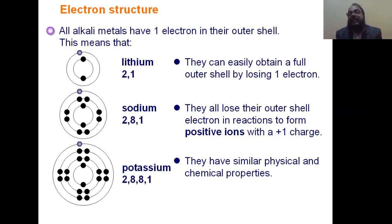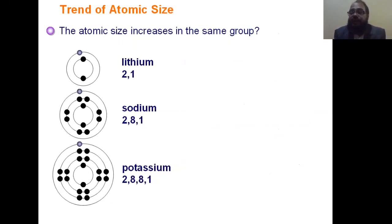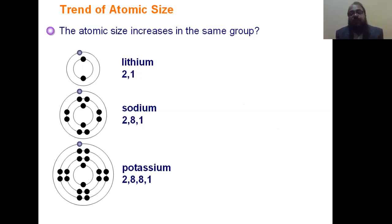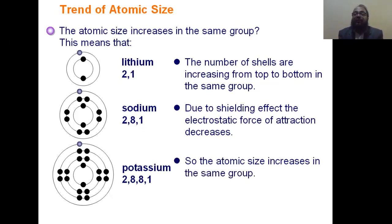A trend is present — which one is more electropositive and which one forms a stronger base. The trend of alkali elements depends upon atomic size. If we understand atomic size, we can understand ionization potential, electronegativity, density, melting point, and other properties. The atomic size is increasing from top to bottom in the modern periodic table. Lithium has only two shells, sodium has three, potassium has four — the number of shells increases from top to bottom. As the number of shells increases, the atomic size also increases. The reason is the shielding effect and the decreasing electrostatic force of attraction from top to bottom.